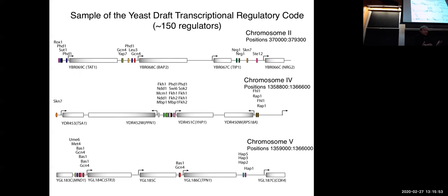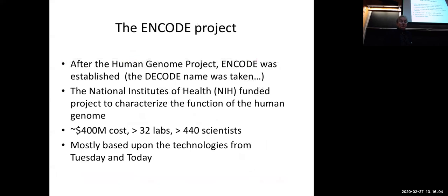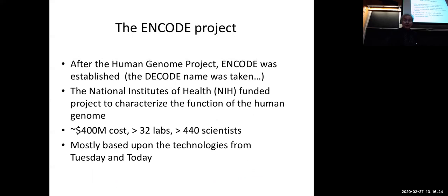This can be distilled down into a draft regulatory code of the species. With the human genome sequenced, the next logical thing is to produce the same kind of regulatory code for the human genome, which is a much bigger place than the yeast genome. So the ENCODE project was started by the National Institutes of Health, cost hundreds of millions of dollars, and involved many research groups including Professor Kellis's group and my research group. The project is based on technologies from last Tuesday's lecture and today's lecture, covering many different data types processed using conventional and deep learning technologies.